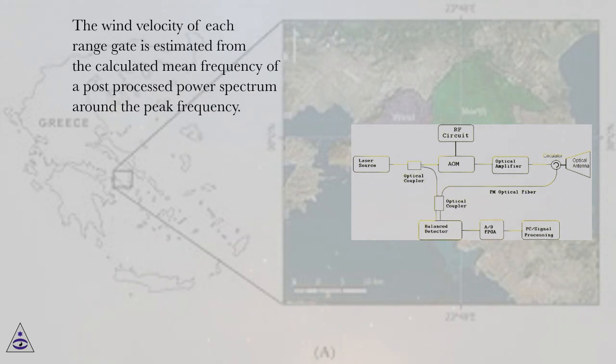The wind velocity of each range gate is estimated from the calculated mean frequency of a post-processed power spectrum around the peak frequency.